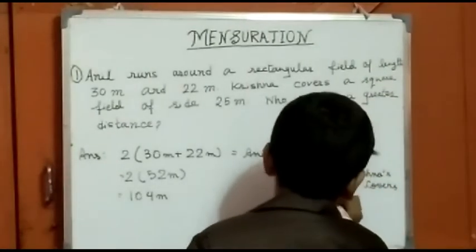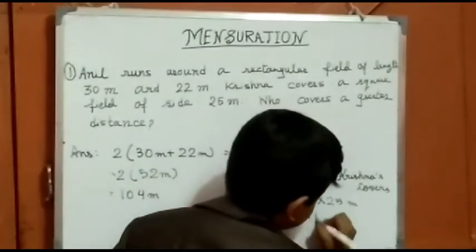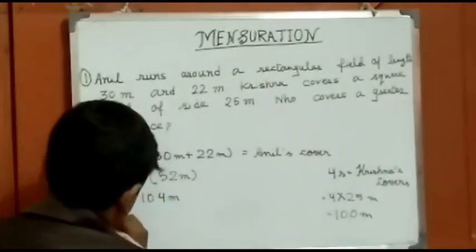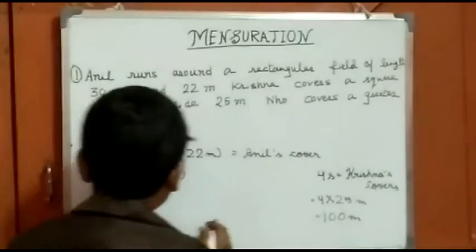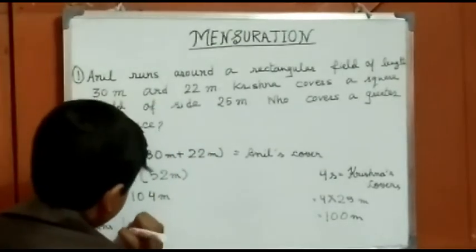So 4 multiplied by 25 m is equal to 100 m. So that means 104 and 100. We know that 104 is greater. So Anil covers more distance.